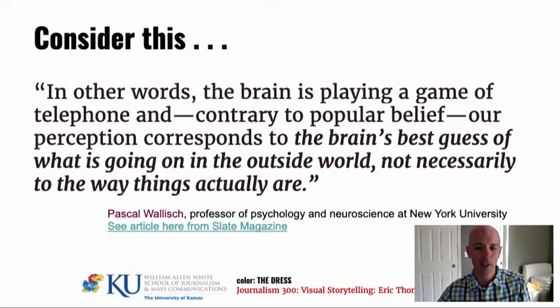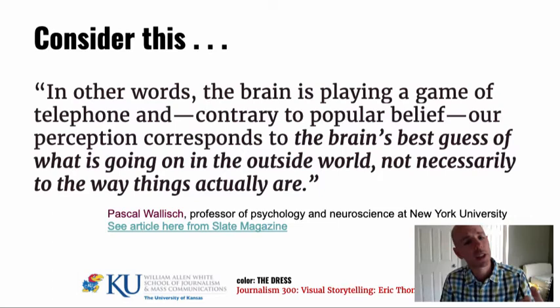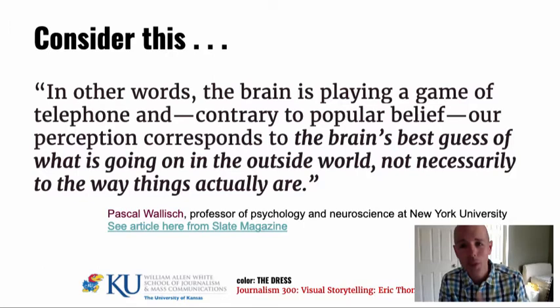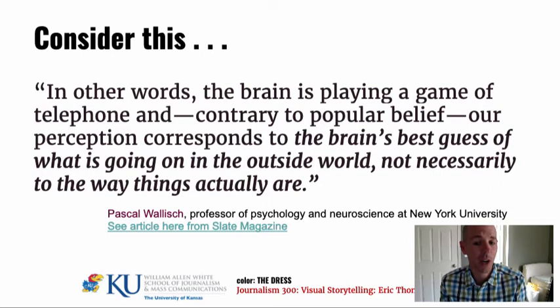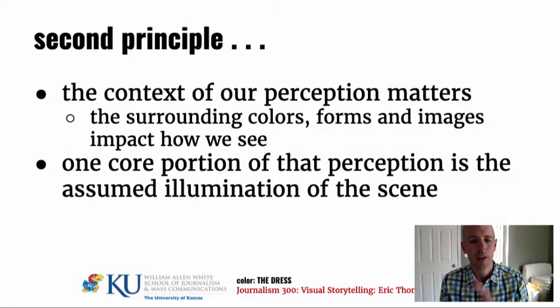The key takeaway: the brain isn't actually seeing what's happening out in the world — it relies on many steps between eye and brain. Slide two of the quote: 'In other words, the brain is playing a game of telephone. Contrary to popular belief, our perception corresponds to the brain's best guess of what is going on in the outside world, not necessarily to the way that things actually are.' That italicized part is worth writing down — and now the stoner in his dorm room says, 'This is what I was talking about the whole time.'